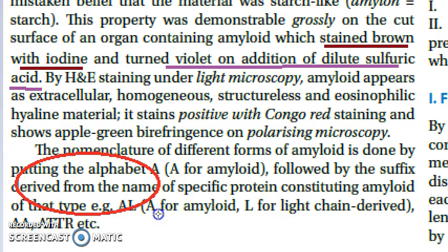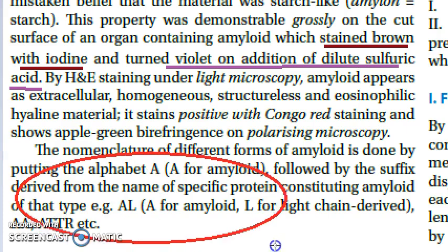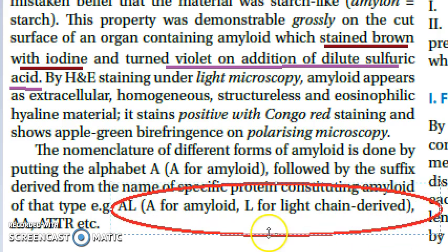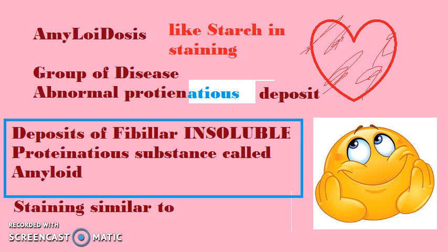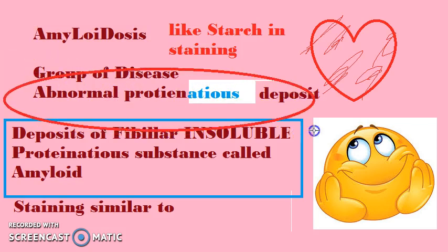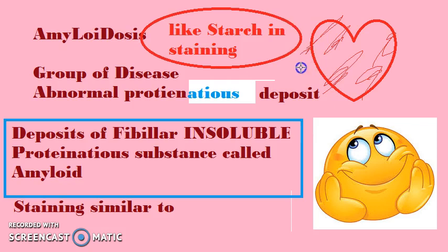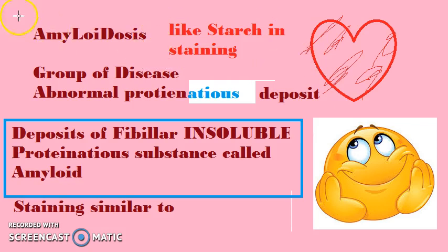Now, regarding the proteins that constitute amyloid: the letter 'A' is used to denote amyloid. For example, AL means amyloid light chain derivative. To recap: amyloidosis is a group of diseases with deposits of abnormal proteinaceous substances called amyloid. These substances are mostly fibrillar and insoluble. They stain mainly with Congo red; earlier, iodine was used and it stained like starch — but it is a proteinaceous substance, not starch. These deposits occur throughout the body and create problems.